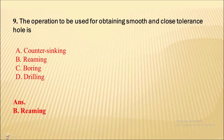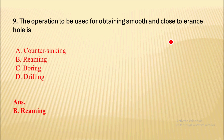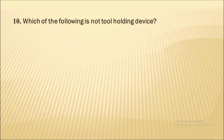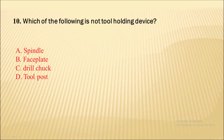Next: the operation used for obtaining a smooth and close tolerance hole is — this is the finishing operation used in drilling, called the reaming operation. Correct option is B.